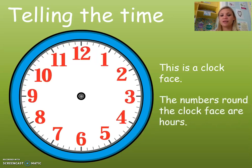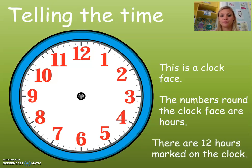This is the clock base. The numbers around the clock base are the hours. These numbers are red on this clock. There are 12 hours marked on the clock.